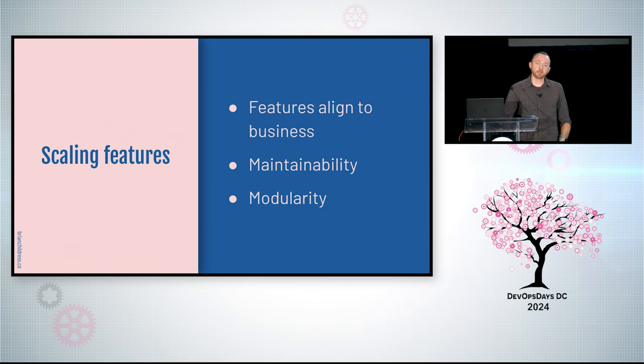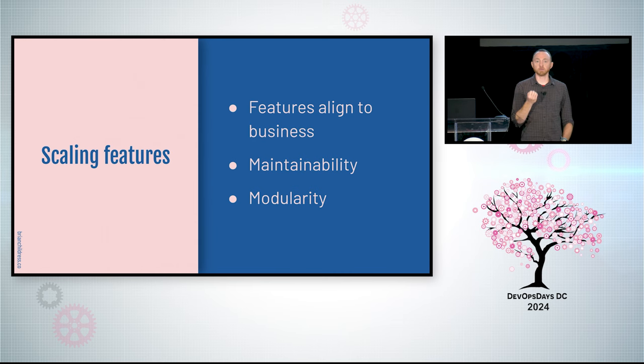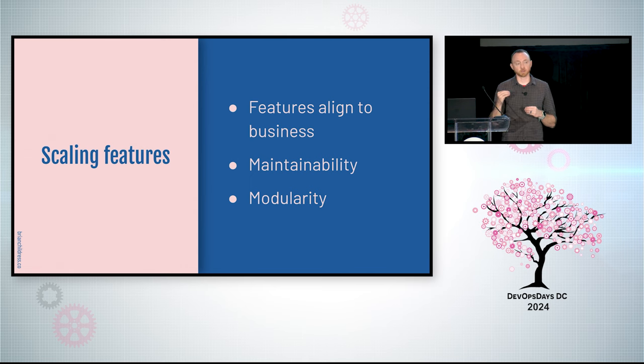And the last way I think about scalability is around developers. How can we add more developers to the platform? How can I add more developers across the globe that we may be communicating in completely different time zones? How can we communicate asynchronously? How can we make sure that our ecosystem is built in a way that allows a developer to join, get up to speed quickly, and start contributing to the code base? When we scale features, we want to make sure that the features are aligned to the business. Features are maintainable and have modularity so that we can move those features as we grow and scale.